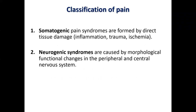Regarding the meaning of pain, we can divide it into somatogenic and neurogenic pain. Somatogenic pain syndromes are formed by direct tissue damage from inflammation, trauma, ischemia, and so on. Neurogenic syndromes are caused by morphological and functional changes in the peripheral and central nervous system — a problem with nerve tissue and its ability to send accurate information about the real condition of our tissues.